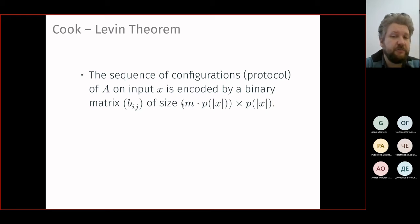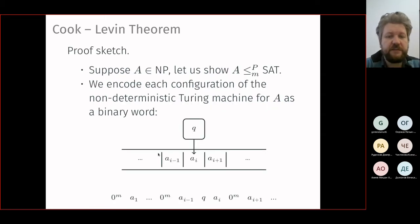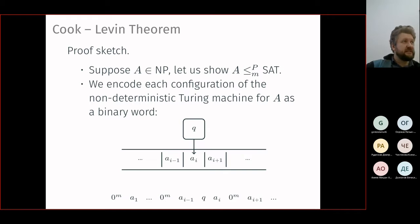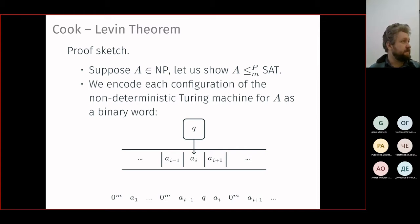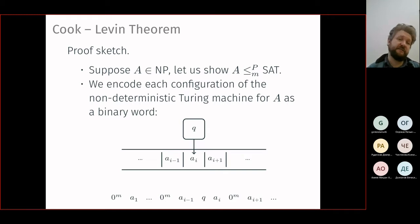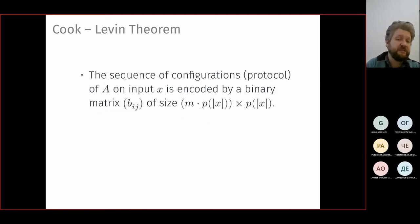The length of each row is also polynomially bounded. Each step can increase the active tape area by at most one element, so the active tape length is bounded by the initial word length plus the number of steps — both polynomial. Therefore the protocol is a matrix of polynomial size, roughly the square of our original polynomial bound.